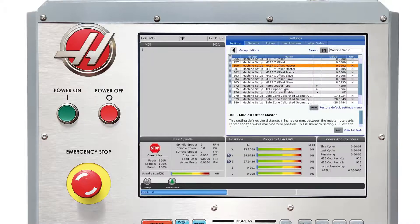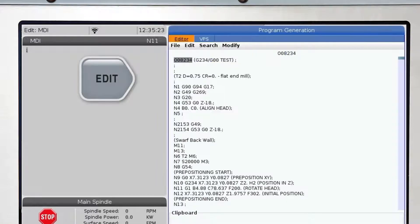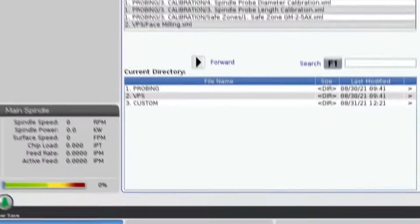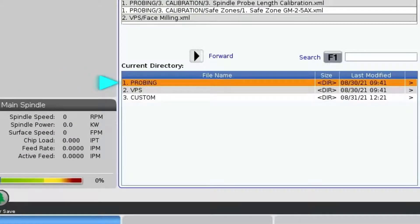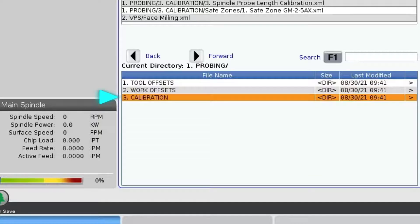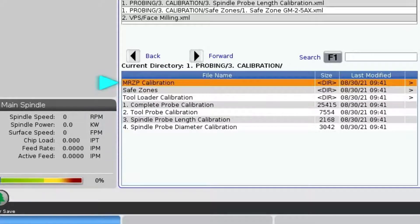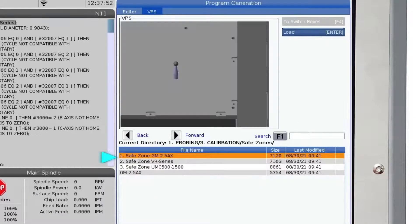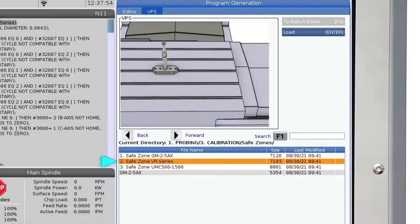Navigate to the safe zone calibration template by pressing the Edit key and navigating to the VPS tab. Scroll down to number one, Probing, right arrow and down to number three, Calibration, and again press the right arrow key. Highlight Safe Zones and hit that right arrow key. Now scroll down to number two, Safe Zone VR series.